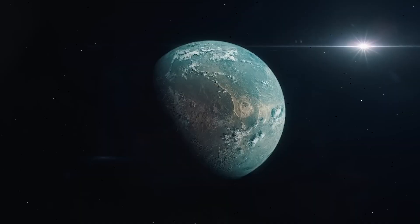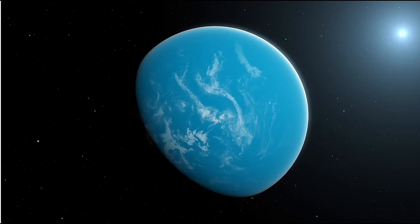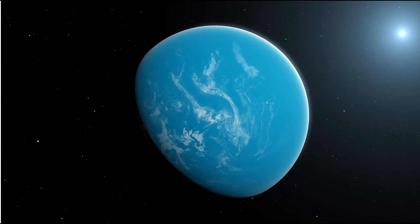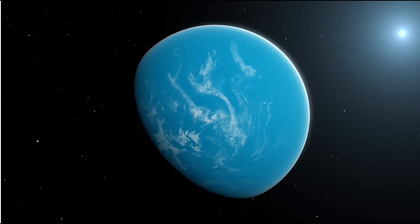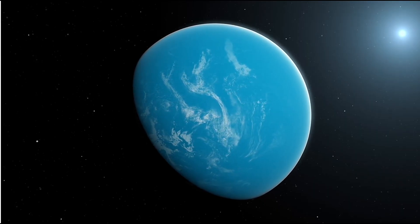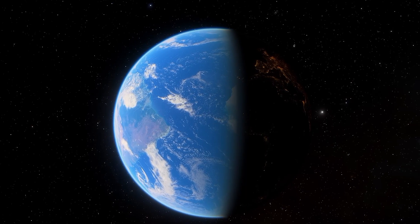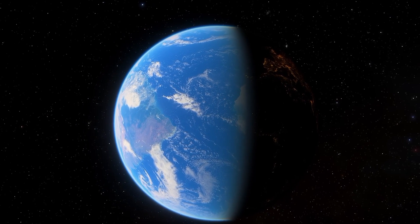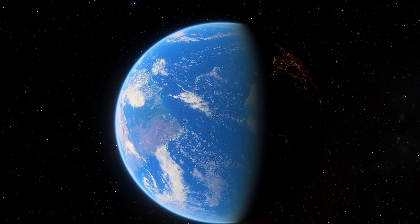The similarities to Earth don't end there. Kepler-452b takes 385 days to orbit its star, which is very close to our 365-day year. This suggests it might have stable seasons, just like Earth, which is another important factor for life to develop.